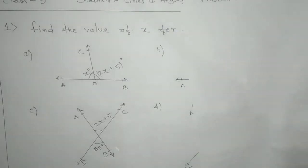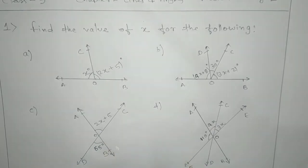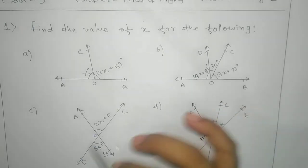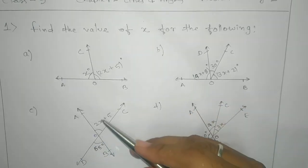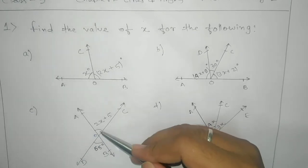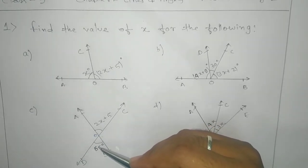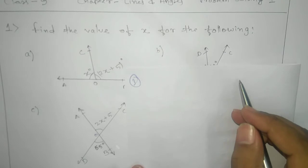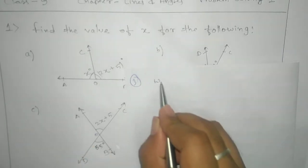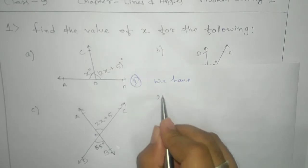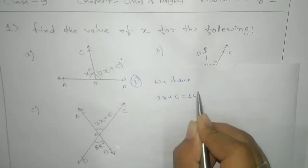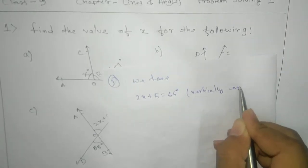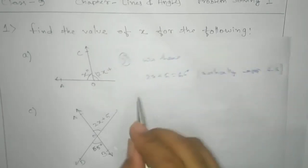Here we have the third problem. Take the intersection point as O — that means AB intersects CD at O. Now you need to find the value of X. We know that they are vertically opposite angles and vertically opposite angles are equal. So we write: 2X plus 5 equals to 65. The reason: vertically opposite angles.